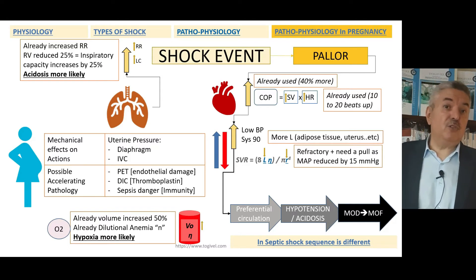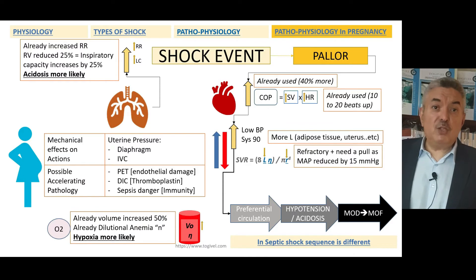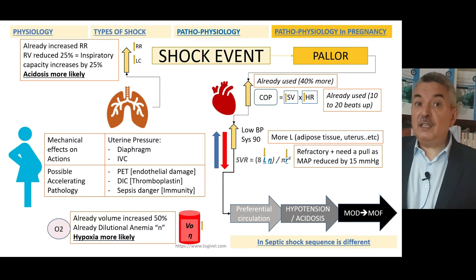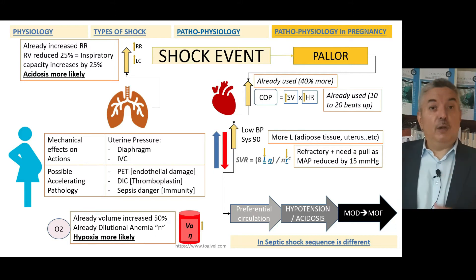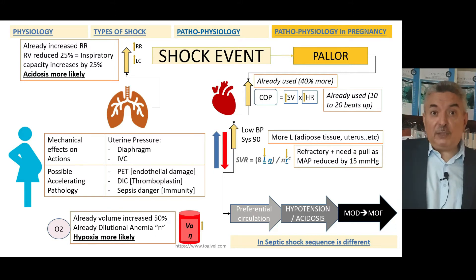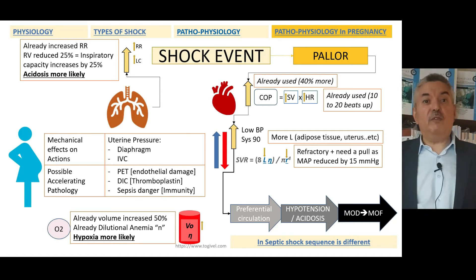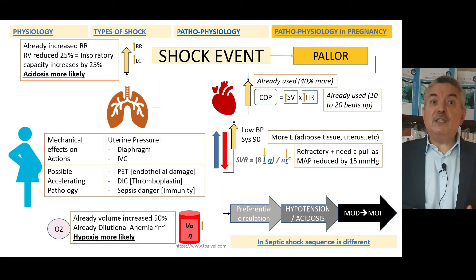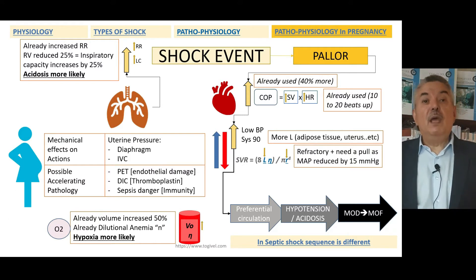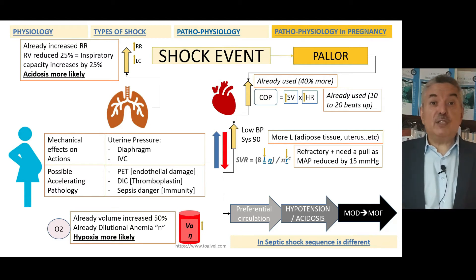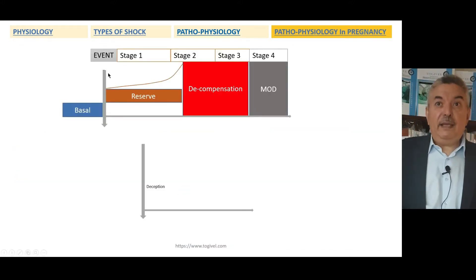Even more in pregnancy, there are mechanical effects like uterine pressure on the diaphragm and on the inferior vena cava, reducing venous return. You may also have pathologies aggravating shock, such as endothelial cell damage and DIC, which occurs very commonly in pregnancy because of increased thromboplastin and stimulation of both pro-thrombotic and fibrinolytic systems. Pre-eclampsia, DIC, and sepsis are all very common and severe in pregnancy due to reduced immunity.